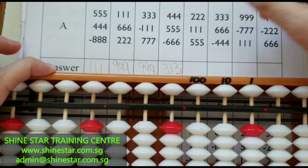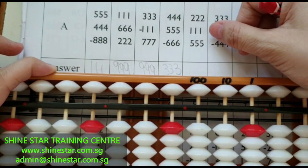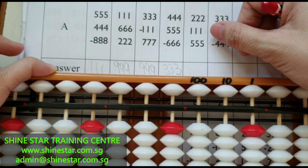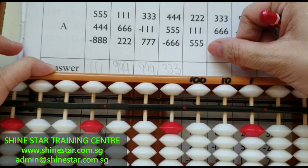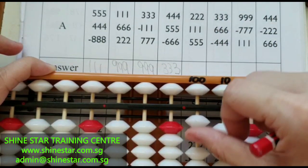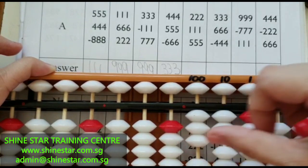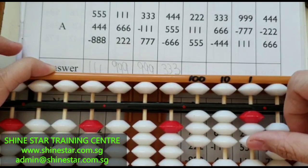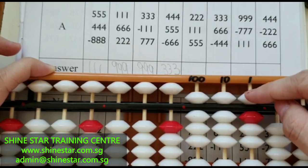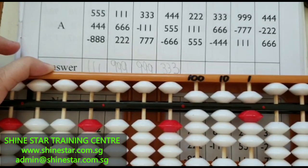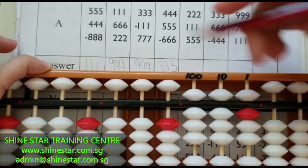Next question: 222 plus 111 plus 555. The answer is 888.